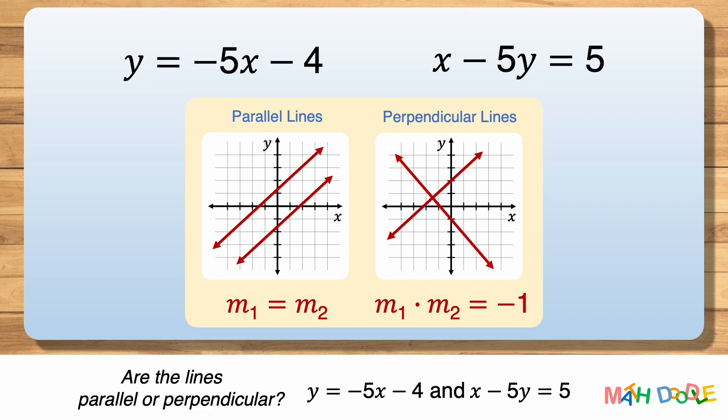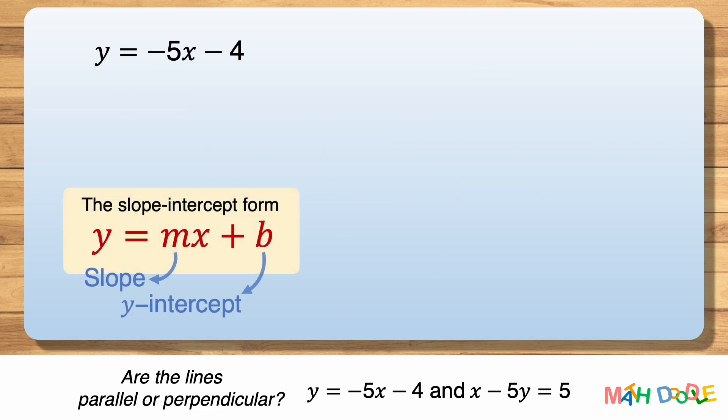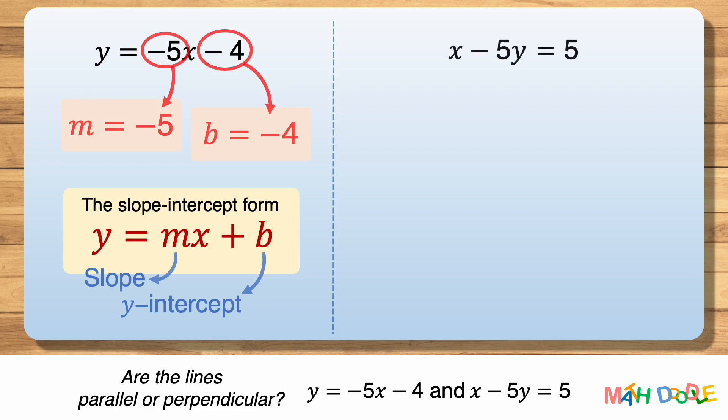First, let's work on y equals minus five x minus four. By comparing this with the slope-intercept form, we can see that the line has a slope of minus five and a y-intercept of minus four. Next, let's work on x minus five y equals five.